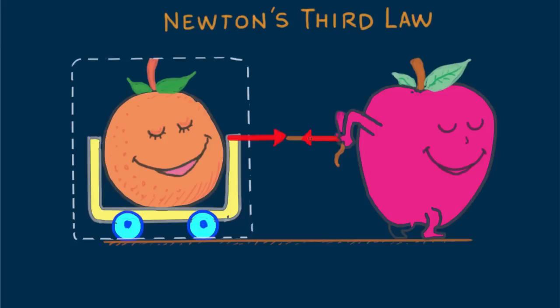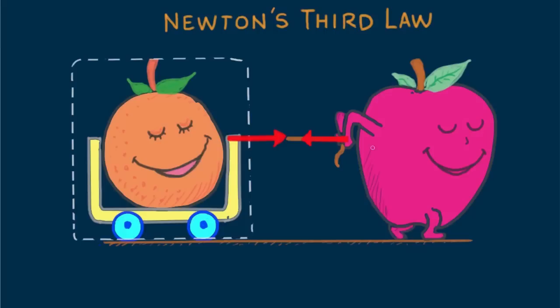We show the pull on the apple with this equal and opposite vector. At this point, the pull on the apple is immaterial. It's external to Miss Orange's system.